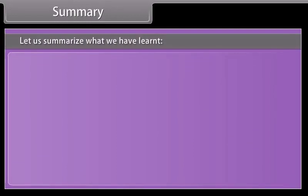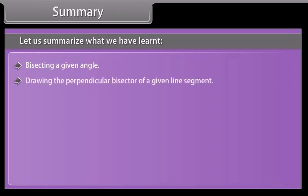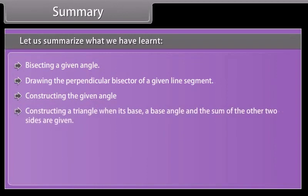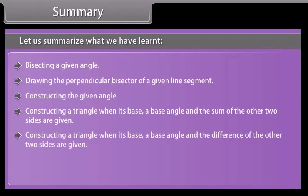Summary: Let us summarize what we have learned — bisecting a given angle; drawing the perpendicular bisector of a given line segment; constructing a given angle; constructing a triangle when its base, a base angle, and the sum of the other two sides are given; and constructing a triangle when its perimeter and its two base angles are given.